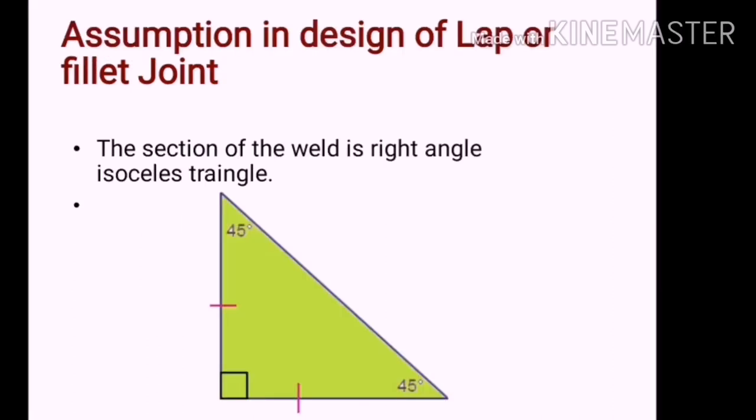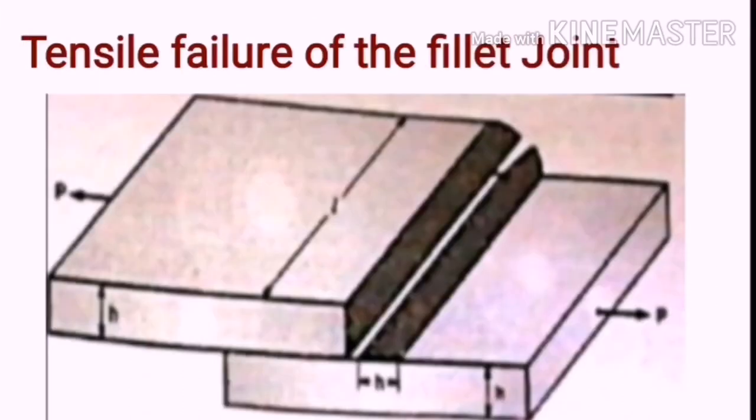Assumptions in design of flap or fillet joint. For calculation and design purpose, it is assumed that the section of the weld is a right angled isosceles triangle. Now, let us have a look on the failures of the fillet joint.